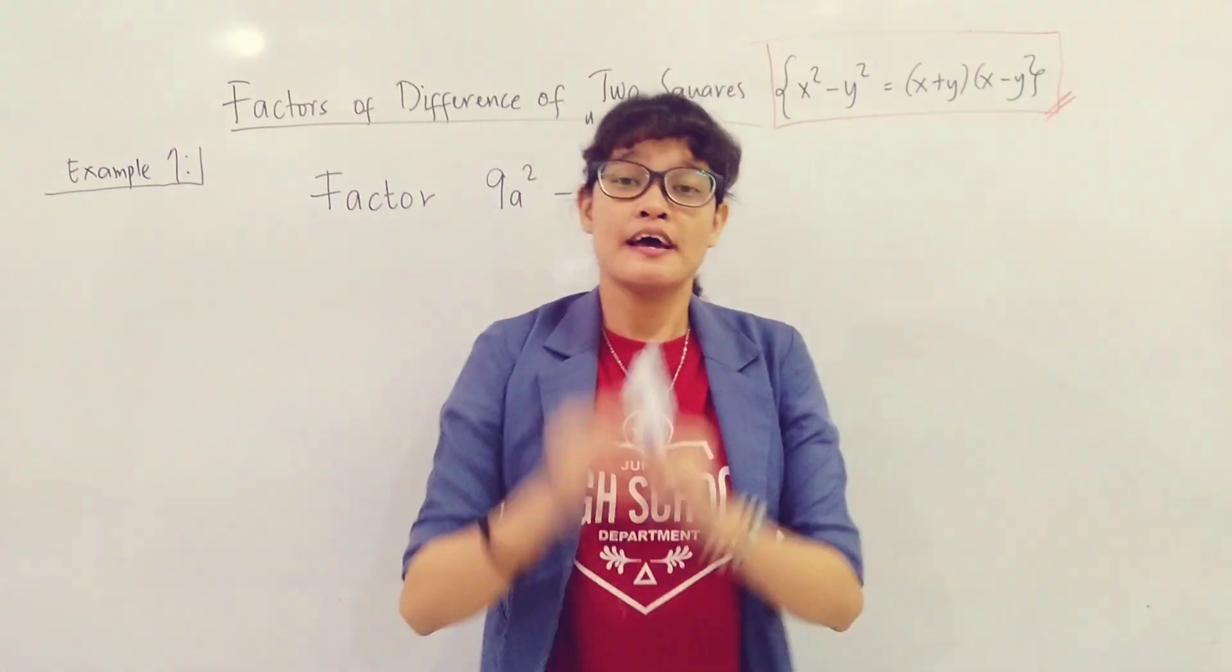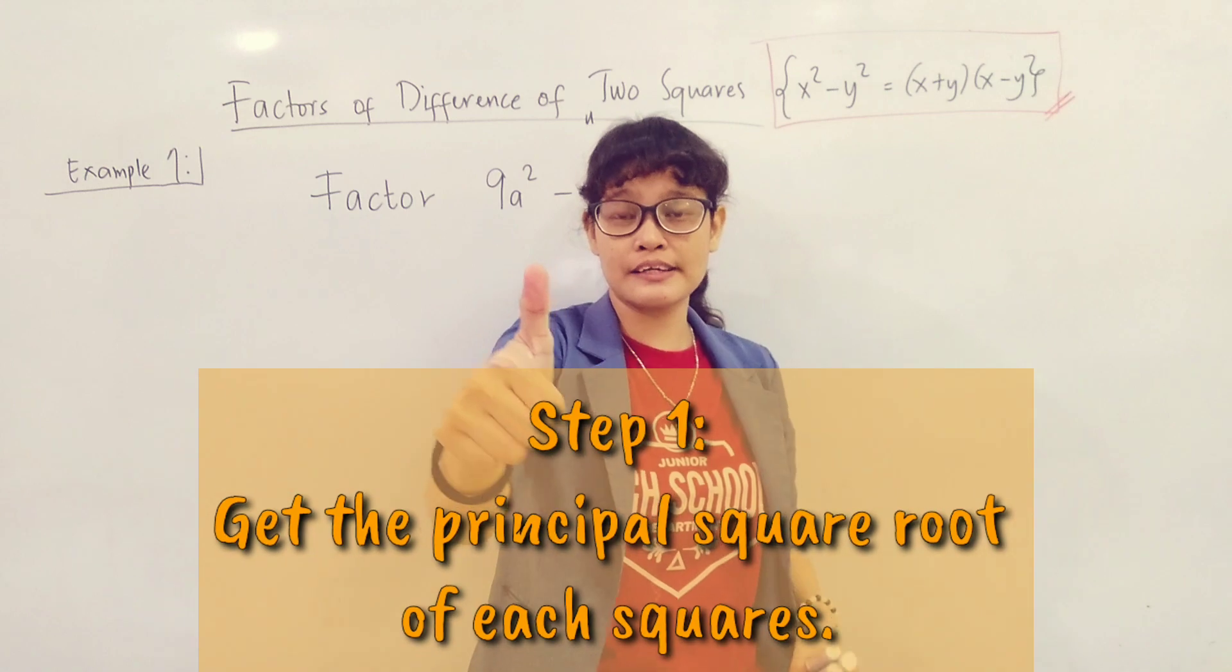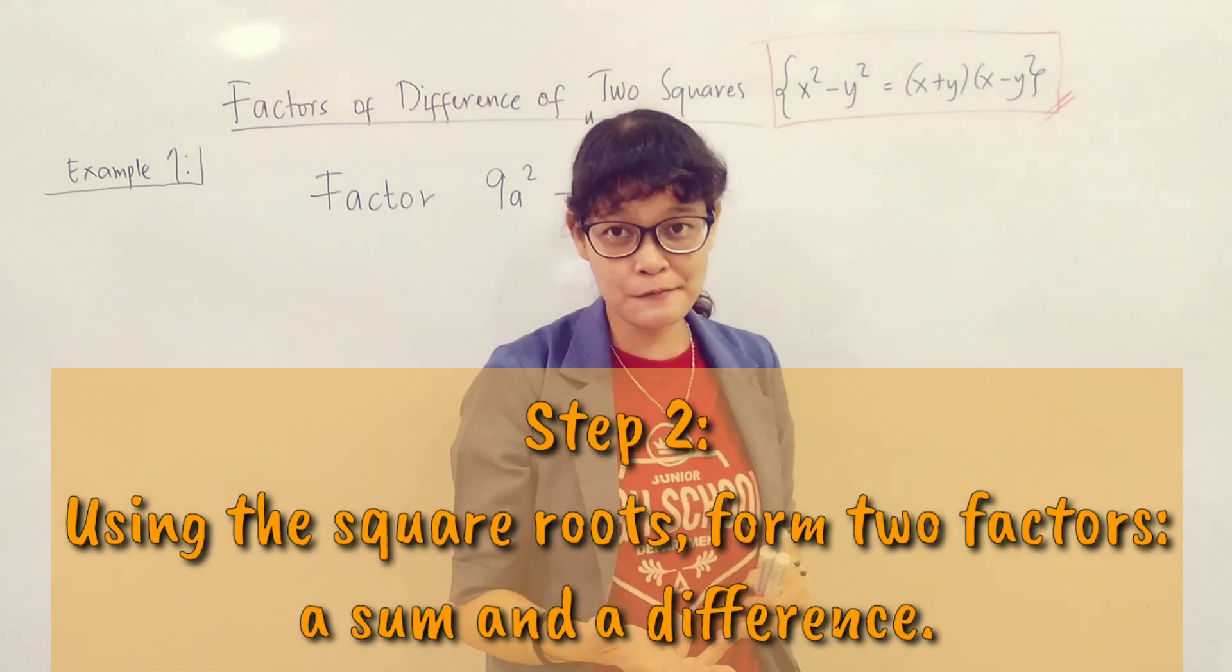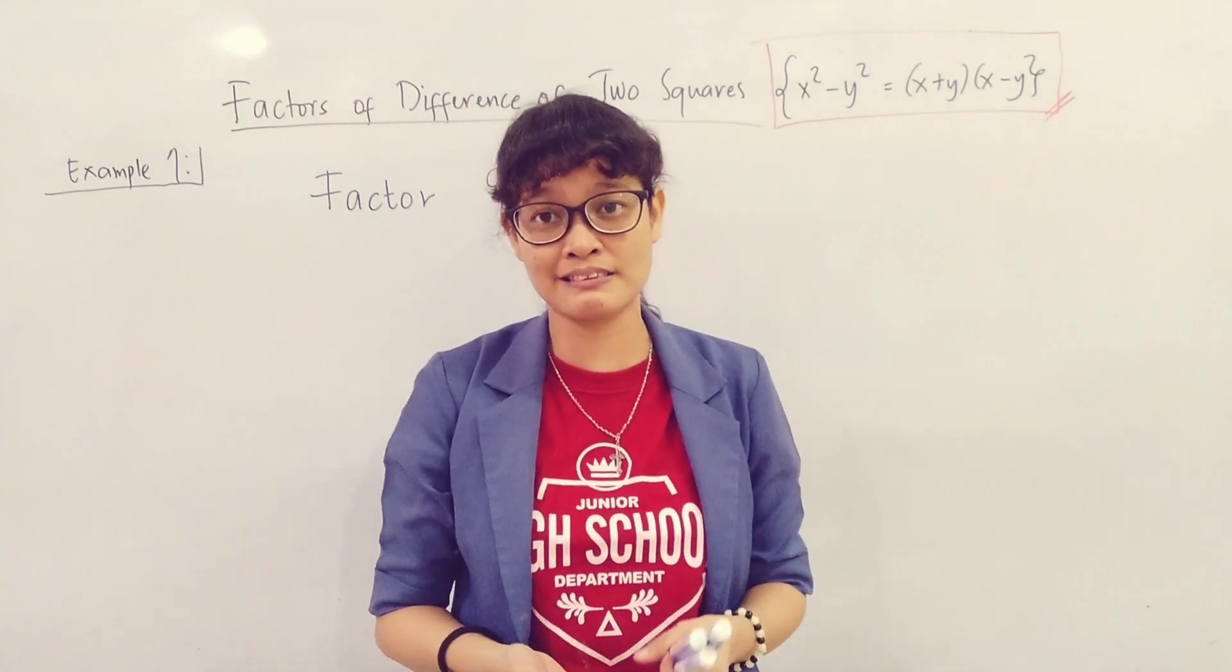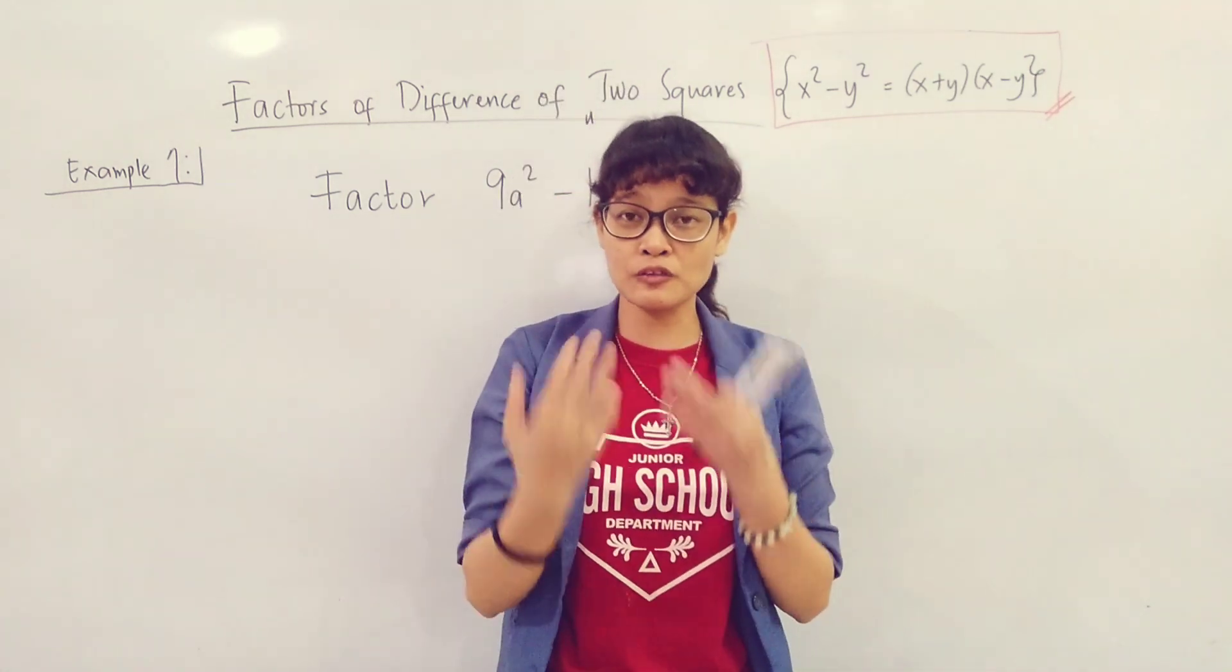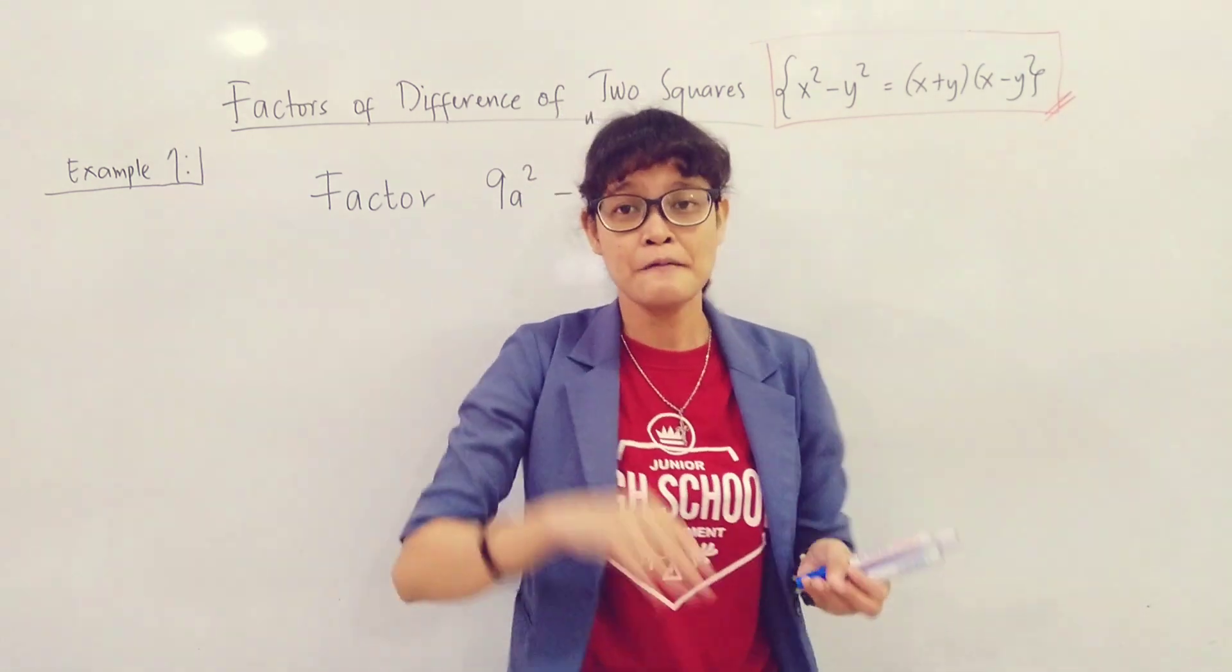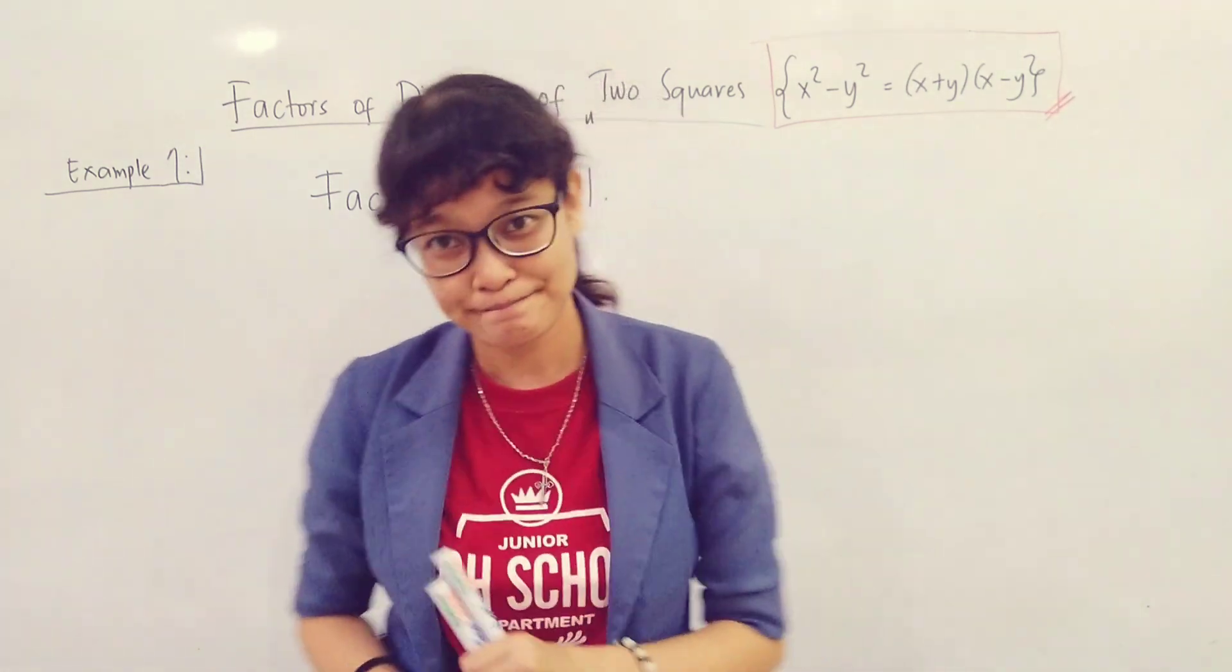In factoring the difference of two squares, you need to remember these two steps. The first one is to get the principal square roots of each square. And then second, using these square roots, you have to form two factors - a sum and a difference. And that's it. Sometimes with polynomials, when we're talking about factoring, the first step is to check if there is any common monomial factors. After determining if there's a common monomial factor, you can proceed with the respective rules for that special product.